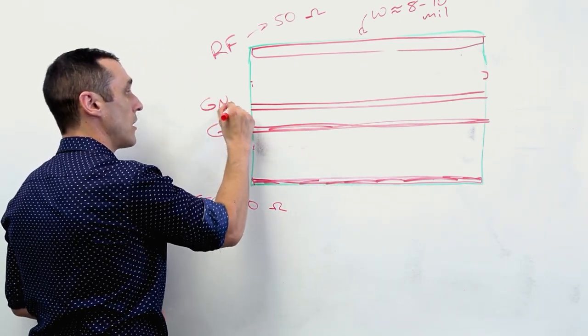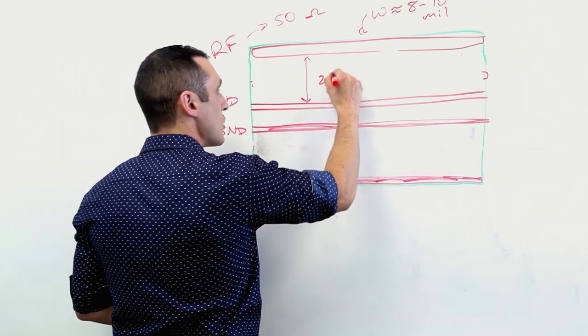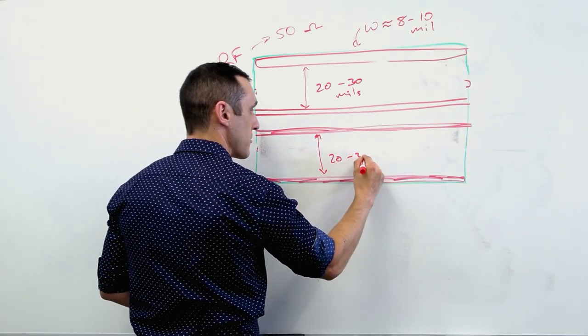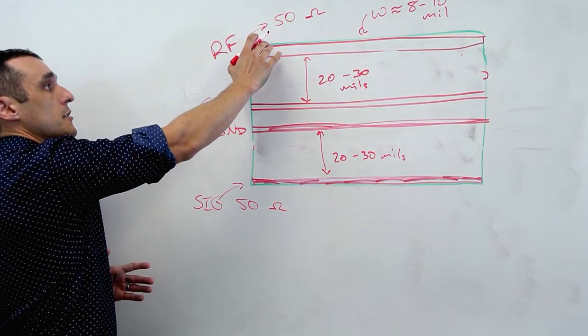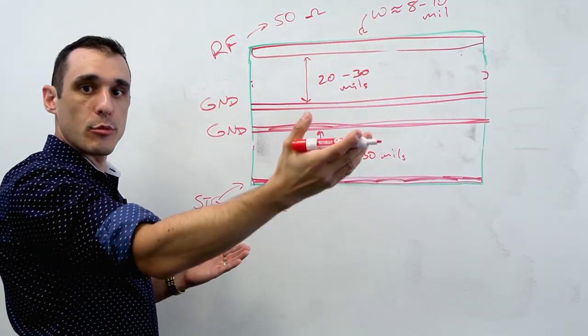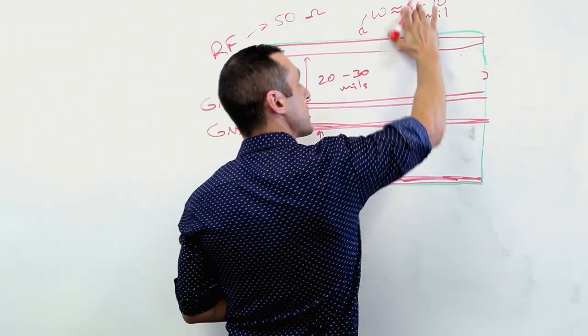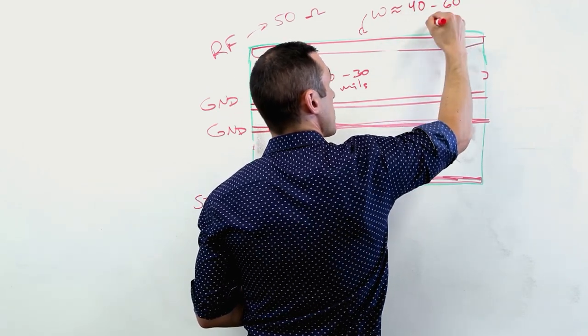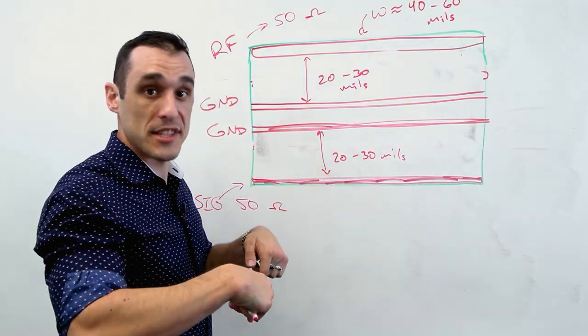One of the alternative stack-ups that you could use instead of having thin outer layers is actually to have a little bit thicker outer layers and then to have a much thinner inner layer. So here you could have ground, you could have ground, and then you can have much thicker outer layers. For example, this might be 20 or 30 mils. This might be also 20 or 30 mils. And what that's going to do is here for these RF lines, it's going to force you to actually use a wider microstrip in order to hit that 50 ohm impedance. By using a wider microstrip, you would then not have 8 to 10 mils here, you'd actually have something much wider, something like 40 to 60 mils for a microstrip. And that's going to force you to use that wider microstrip so then you bring down the skin effect losses.